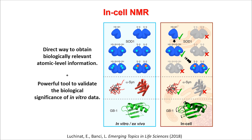It combines the high resolution of NMR with the high biological significance of the data that you obtain. By comparison between the in-cell NMR data and the data that you normally obtain in vitro, it can be employed as a powerful tool to validate the significance of in vitro information. For example, it can be applied to monitor protein folding and maturation processes involving metal binding and disulfide bond formation, or to investigate the conformation of intrinsically unfolded proteins in cells, and also to investigate differences in the three-dimensional structure of proteins due to interactions between the protein and the intracellular environment.